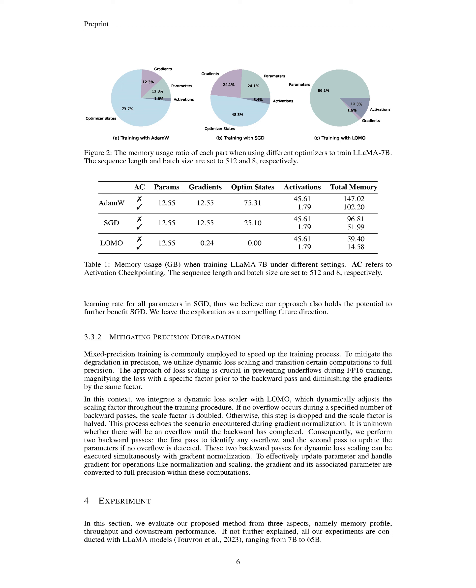To speed up the training process, mixed precision training is often used. However, this approach can sometimes lead to a decrease in precision. To counteract this, we employ dynamic loss scaling and selective use of full precision computations. Dynamic loss scaling is key to avoid underflows when training with 16-bit floating point numbers, FP16. This method involves magnifying the loss by a certain factor before the backward pass, then reducing the gradients by the same factor. We integrate this dynamic loss scaling approach with LOMO, adjusting the scaling factor as needed during the training process.